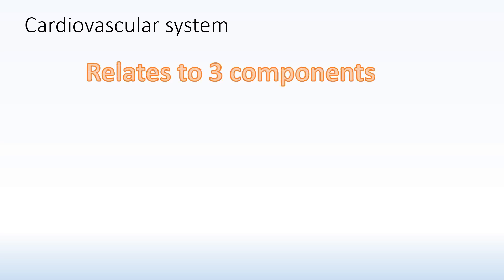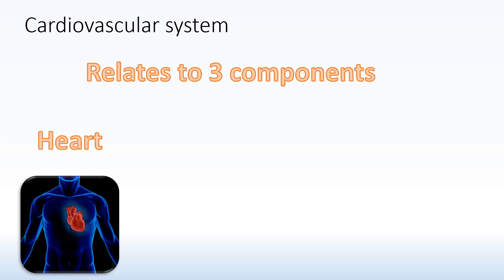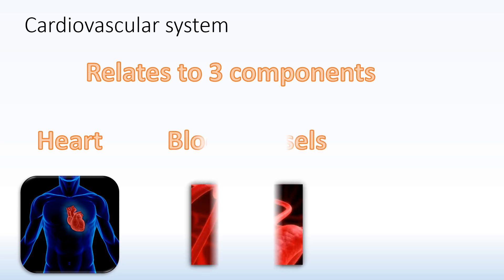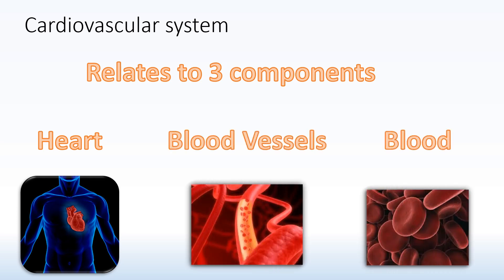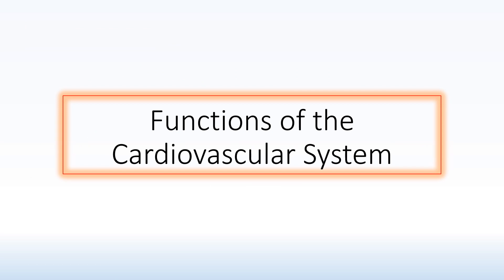Now on to the cardiovascular system. When we talk about the cardiovascular system, we are talking about three main components: the heart, which is known as the cardiac; the blood vessels; and also the blood. Those three components help us talk about the functions of the cardiovascular system.